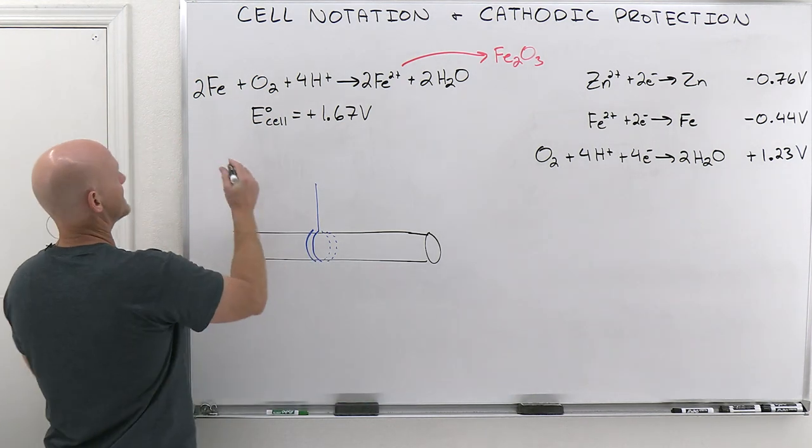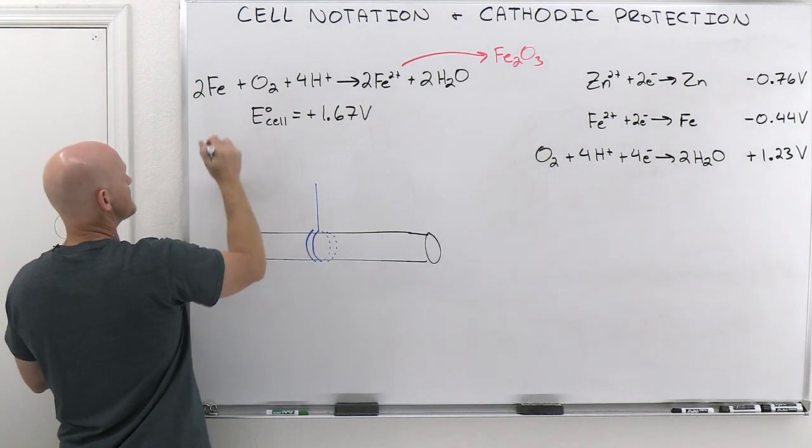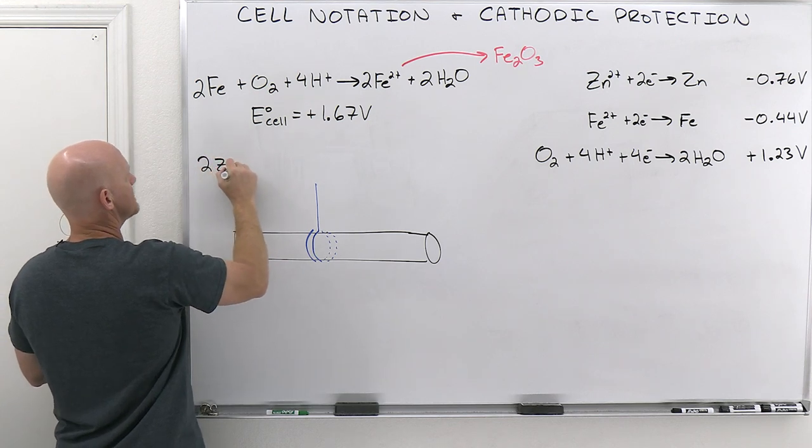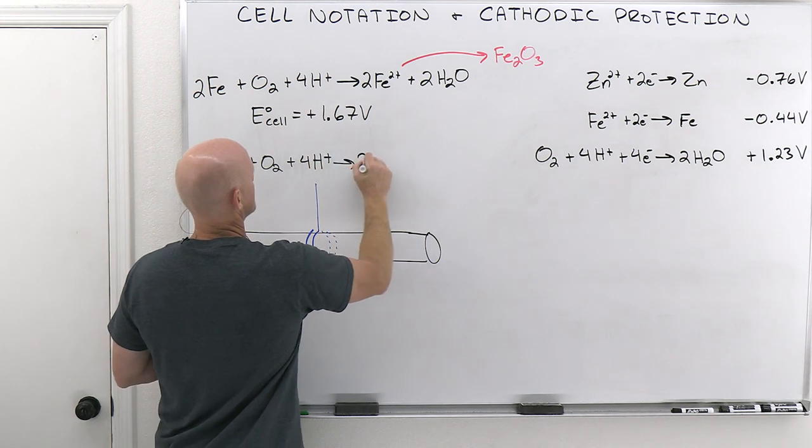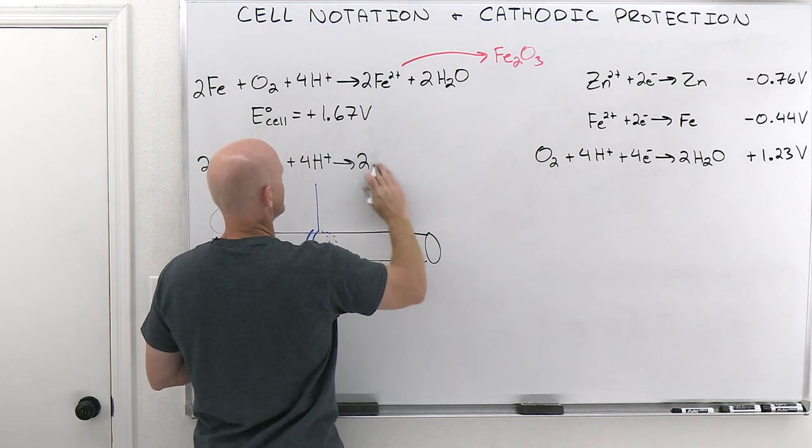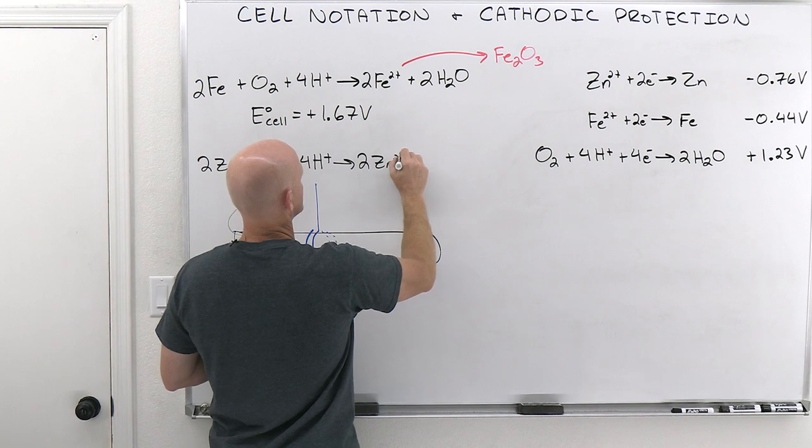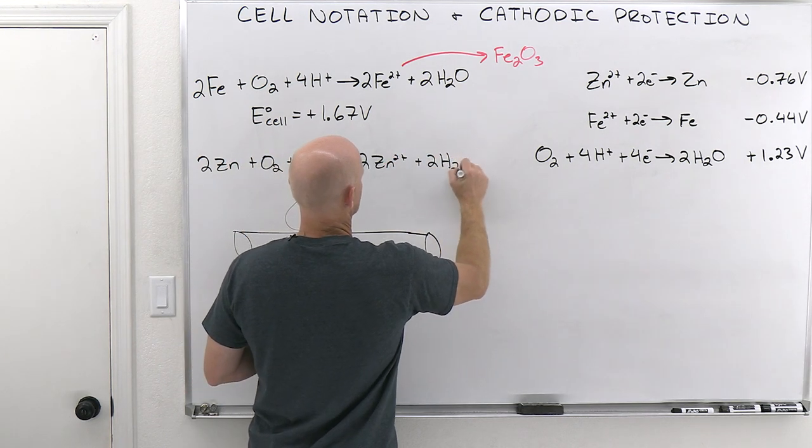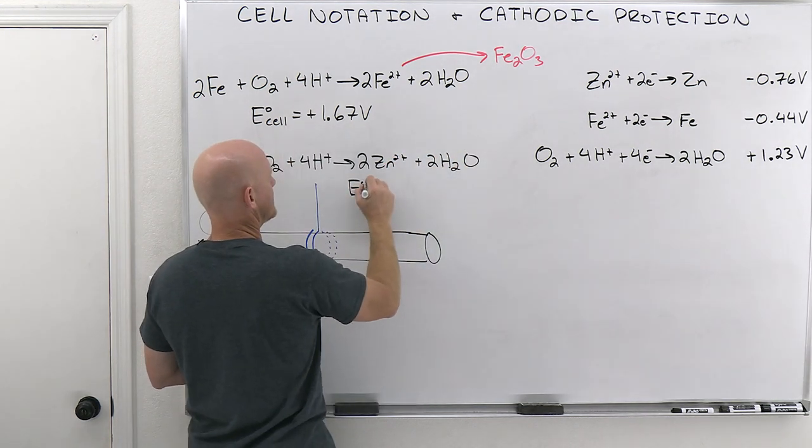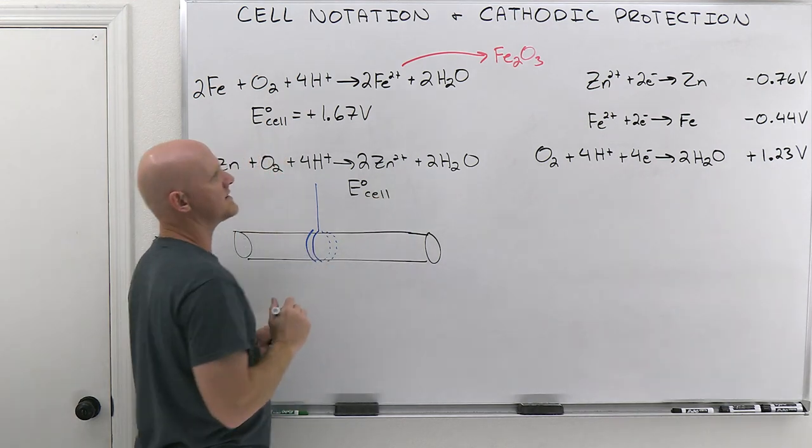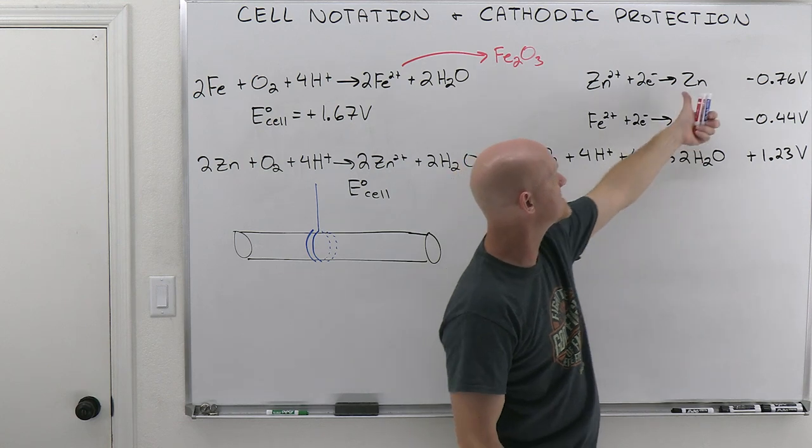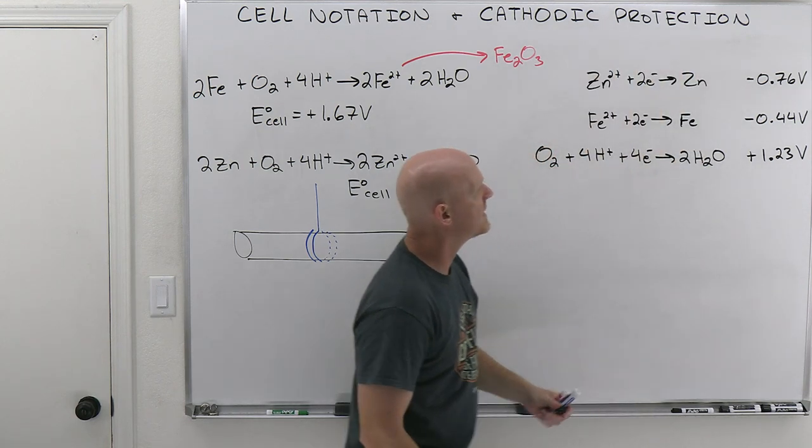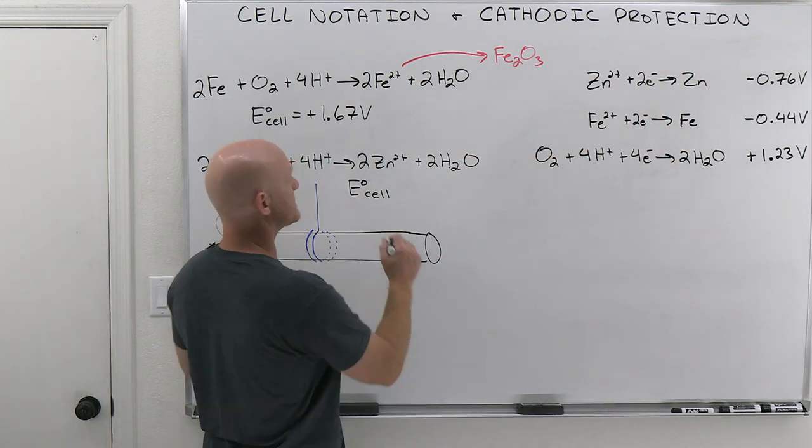And so the reaction you're going to get here, instead of the 2Fe, you're now going to replace that with the 2Zn, plus O2, plus 4H+, going to 2 zinc 2+, plus 2 water. And now your E cell's going to be even more spontaneous overall, and so 1.23 plus the positive 0.76 for the reverse oxidation should be 1.99 volts here.